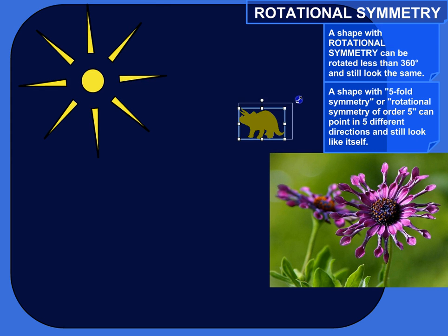Triceratops does not have rotational symmetry. If I rotate him like this, he's not lined up. If I rotate him like that, he's not lined up. I have to do a full 360 in order to get him to line up with himself. So no rotational symmetry there. Sorry, buddy.